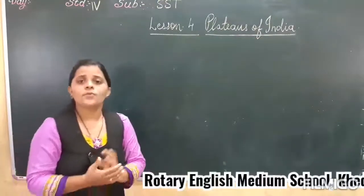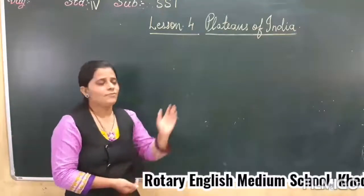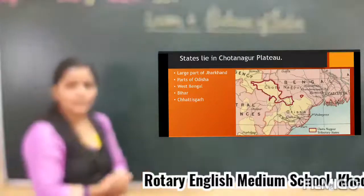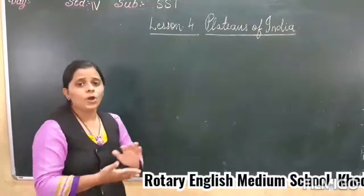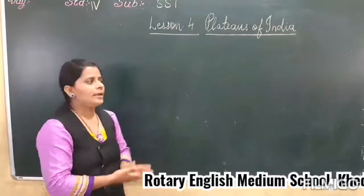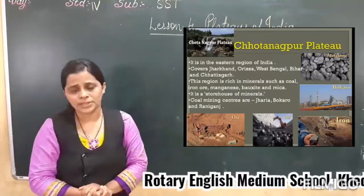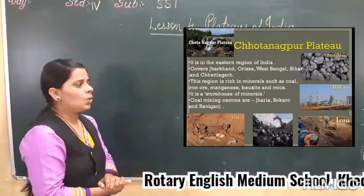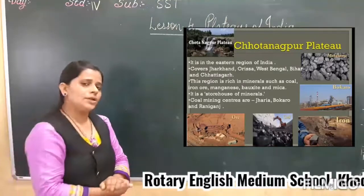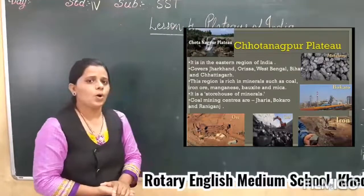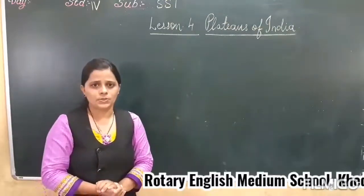The Chhota Nagpur Plateau is located in the eastern region of India, covering states like Jharkhand, Odisha, West Bengal, Bihar and Chhattisgarh. This plateau is known as the storehouse of minerals — it is very rich in minerals such as coal, iron ore, bauxite and mica. Hope you have understood the concept of Central Highlands. In the next video, we are going to learn about the Deccan Plateau. Thank you.